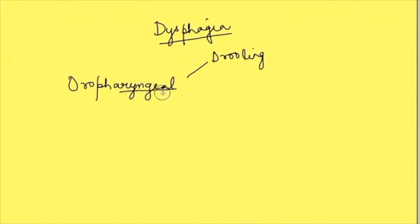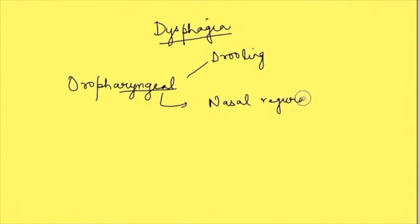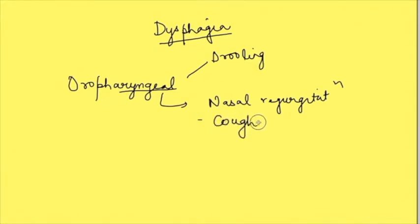In the pharyngeal phase, there may be nasal regurgitation, because closure of the nasopharynx occurs in this phase. There may also be repeated coughing after food, because food can enter into the air passages.